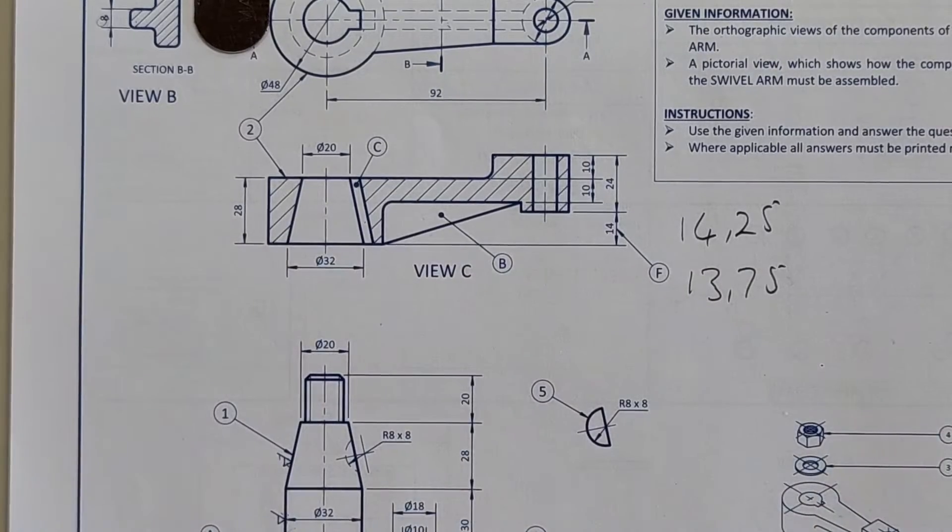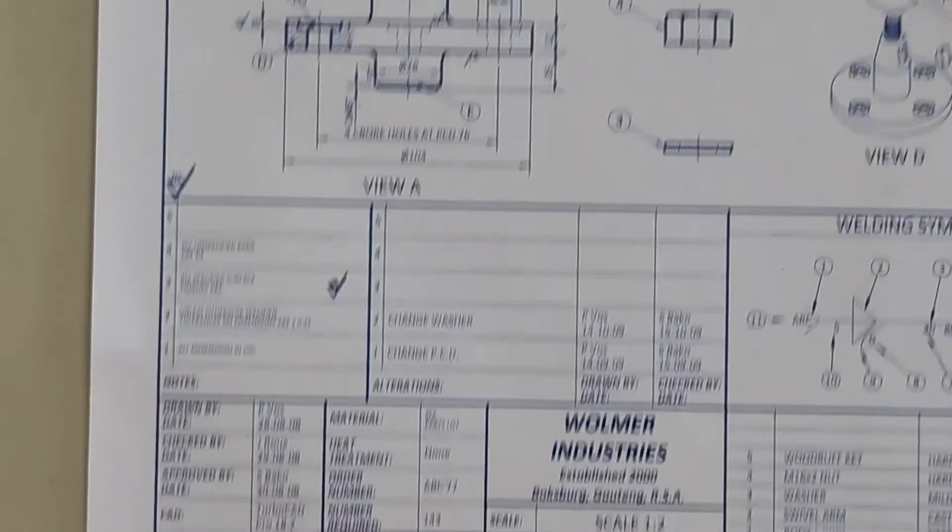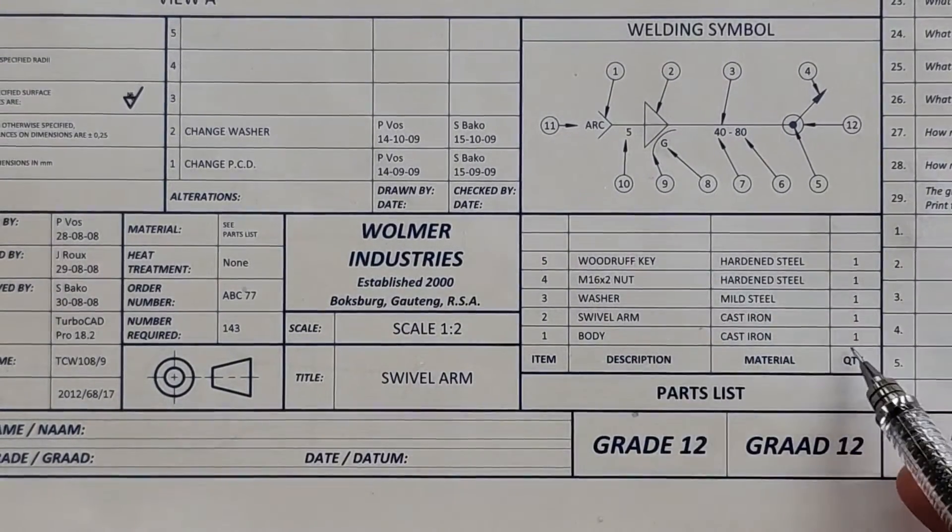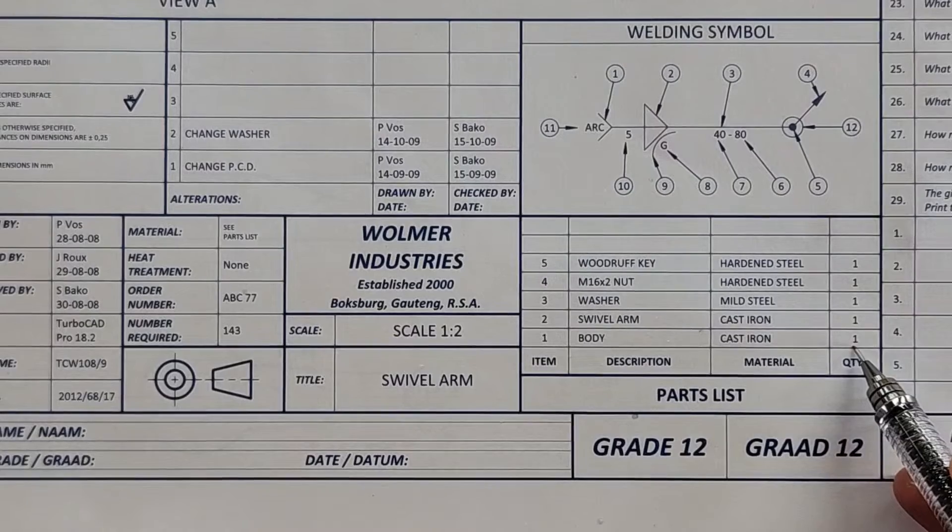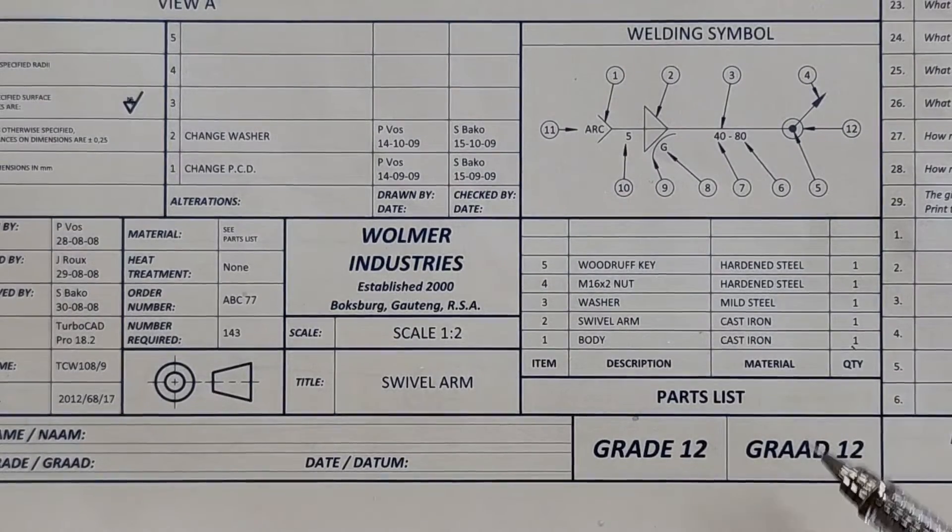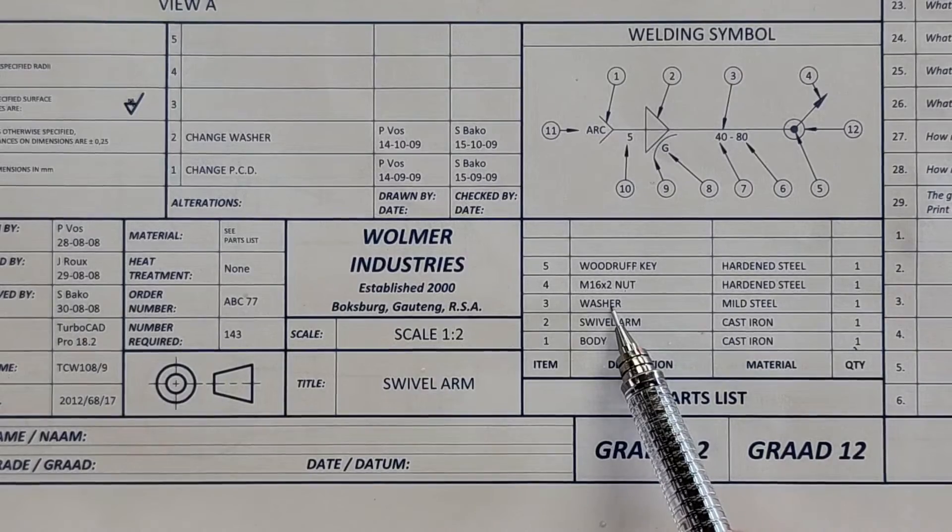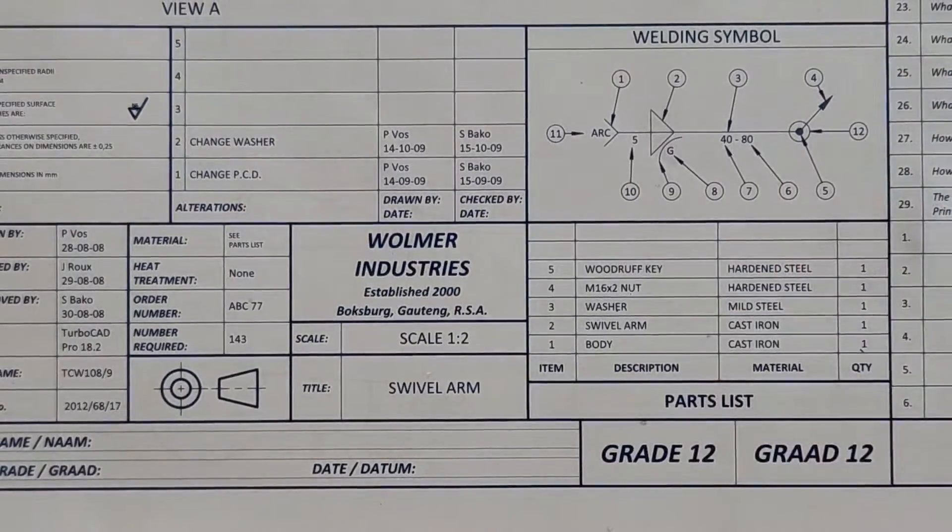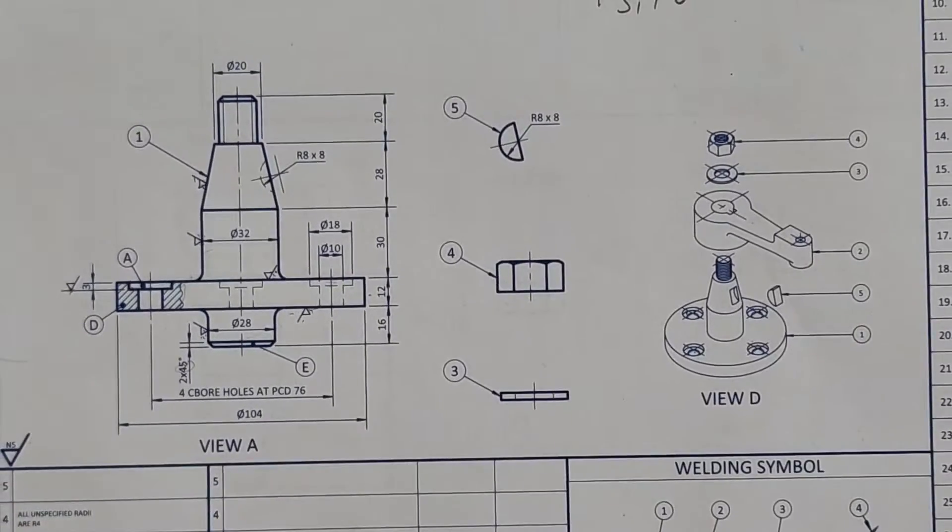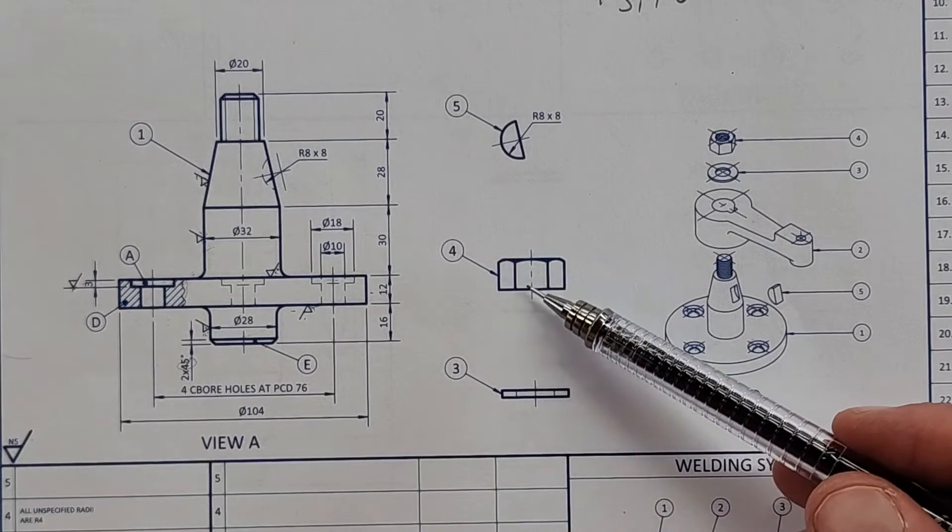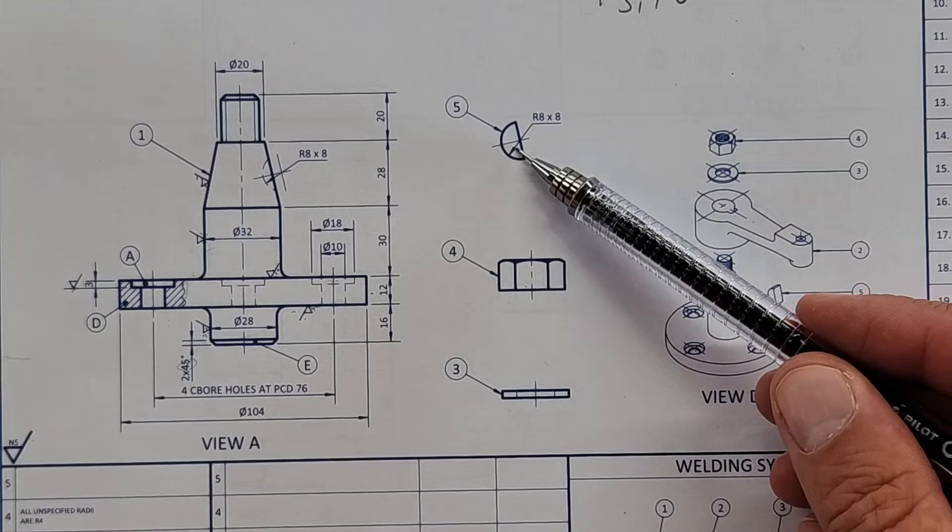How many components are used in the assembly? There are 5 of them and there is 1 of each. How many fasteners are used in the assembly? We have the key, the nut, and the washer - 3. They actually have thrown them there for you: the washer, the nut, and the Woodruff key.